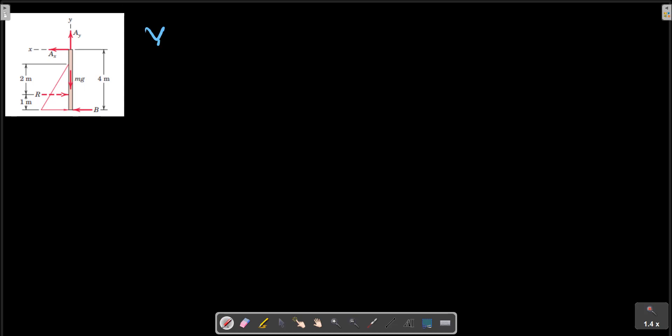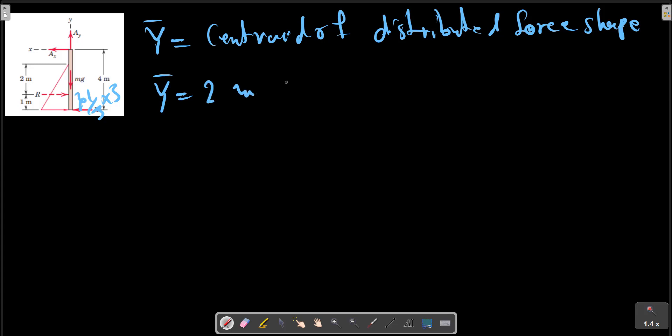And the point of application of R, Y bar equals to the centroid of distributed force shape. So we have a triangle from the above. Y bar is 1 over 3 multiplied by 3. So Y bar equals to 2 meters from the free surface.